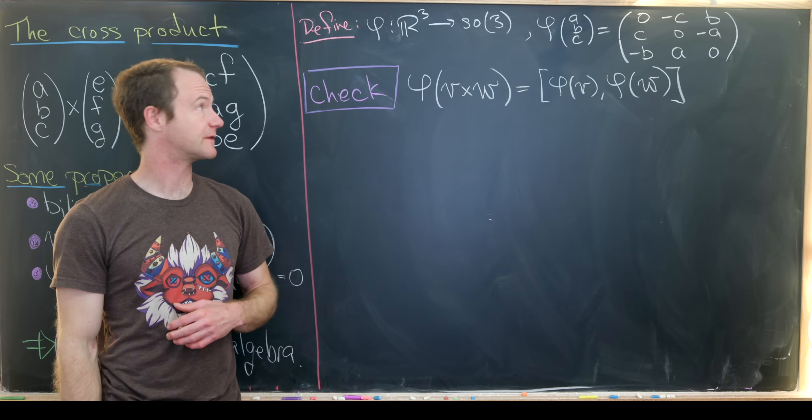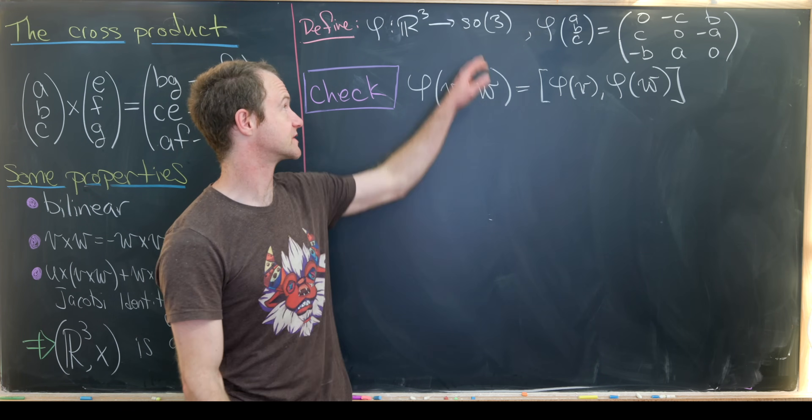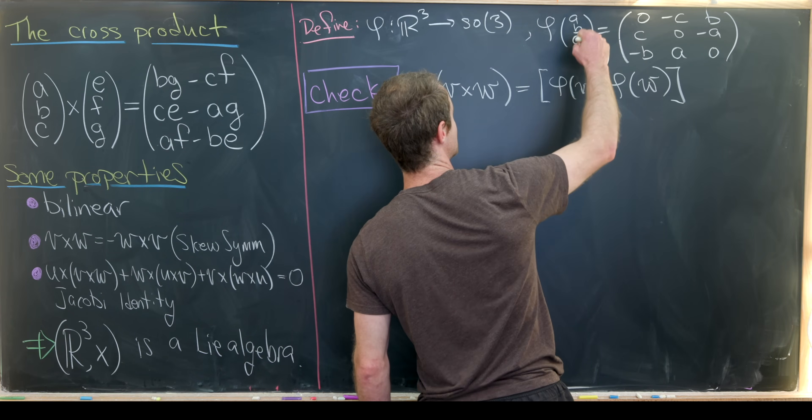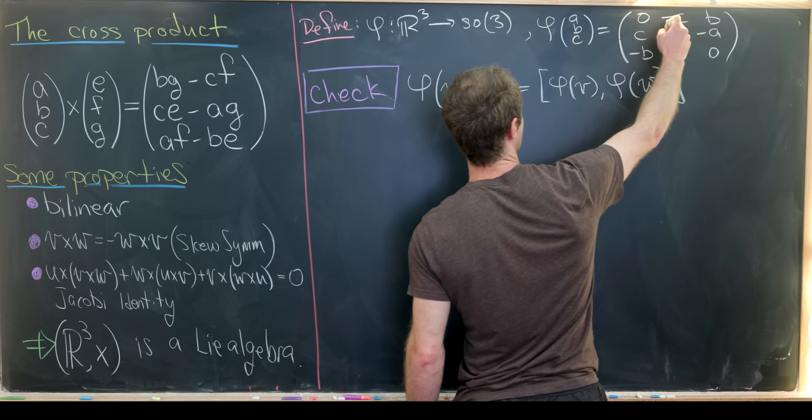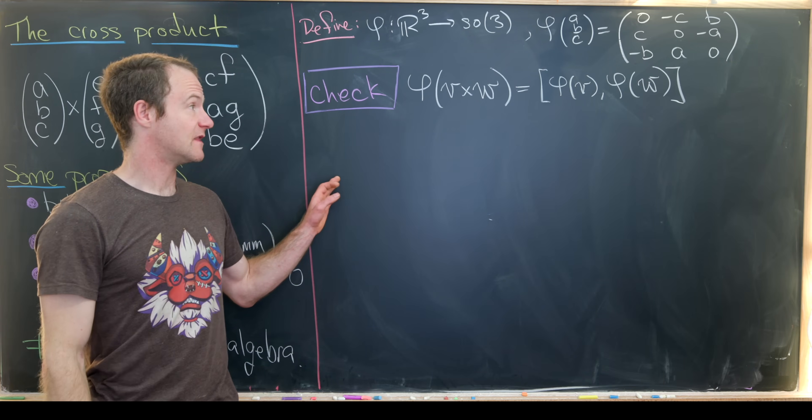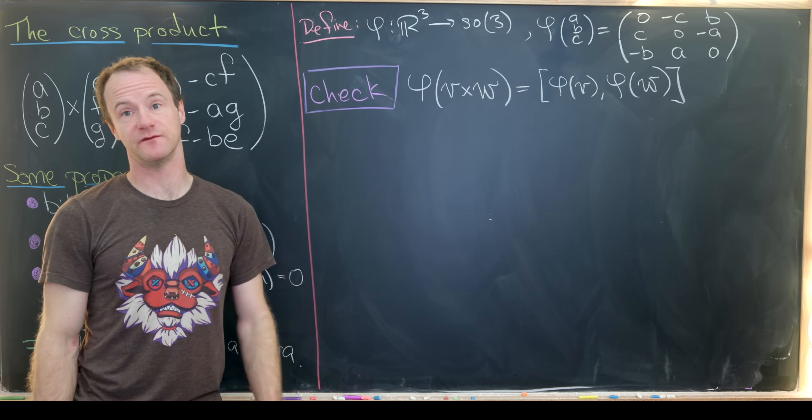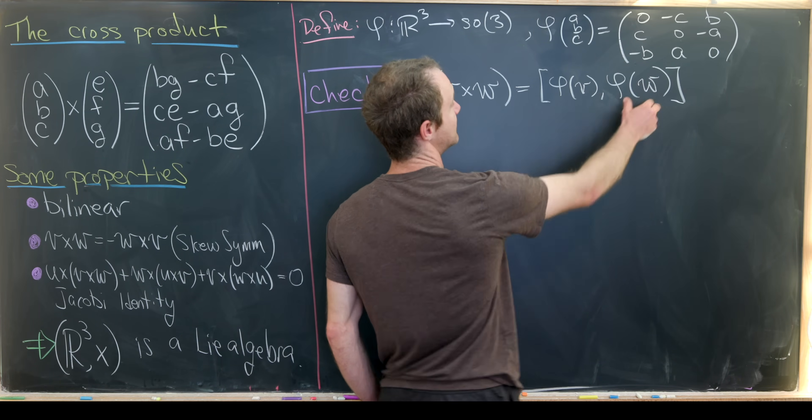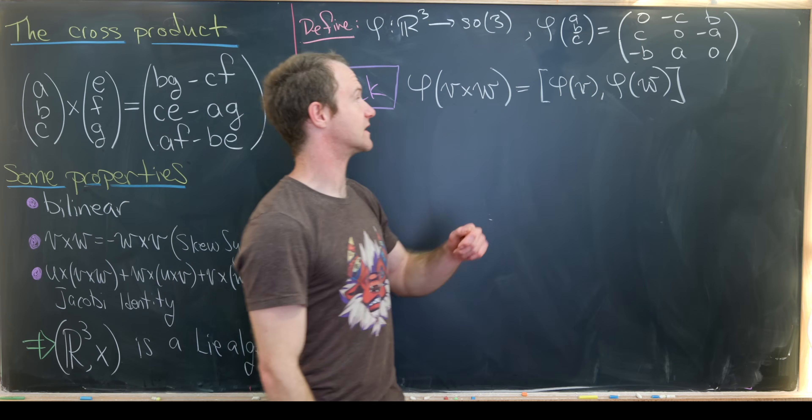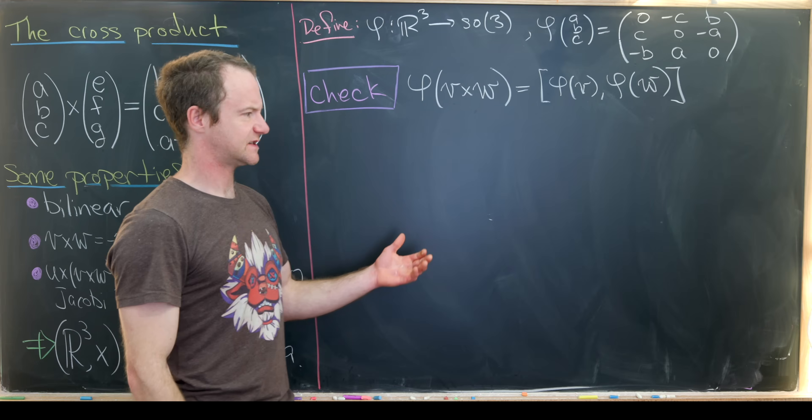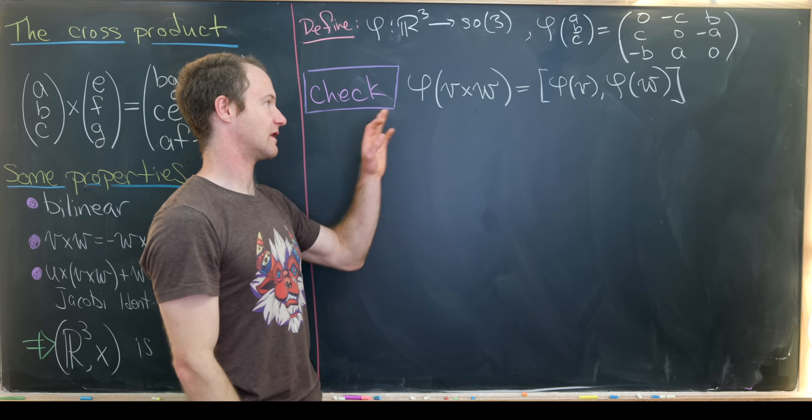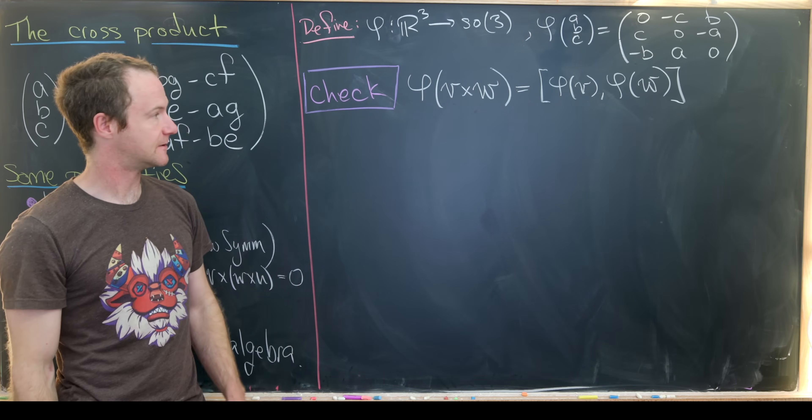So far, we've motivated the definition of the following map. So it goes from R3 to SO3, those are three-by-three skew symmetric matrices. And it takes the three-vector ABC to the three-matrix defined like this. And now we'd like to check that if we take phi of the cross product of V and W, we get the commutator of phi of V and phi of W.